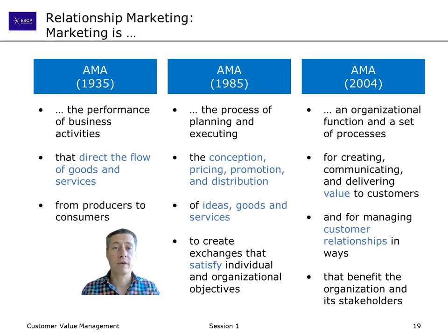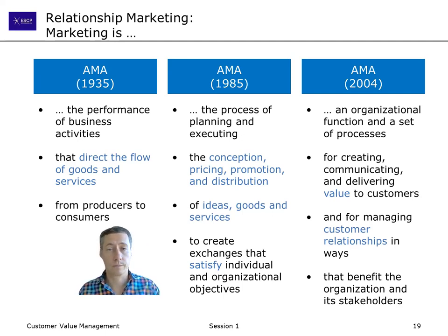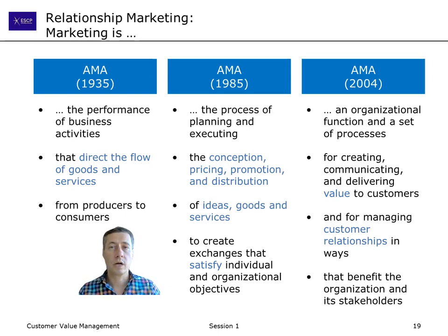In 1935, marketing was defined as the performance of business activities that direct the flow of goods and services from producers to consumers. Essentially, marketing in 1935 was defined as a kind of logistics or supply chain exercise — bringing stuff from the factory where it's produced to the end consumer. There was no mention of advertising, pricing, or anything else. It was just logistics.